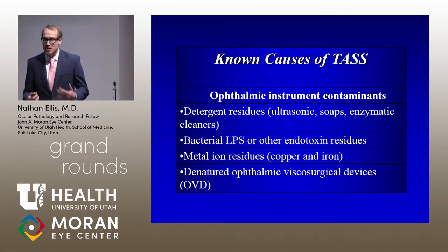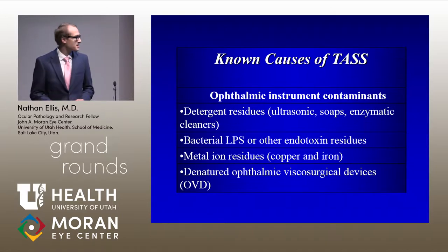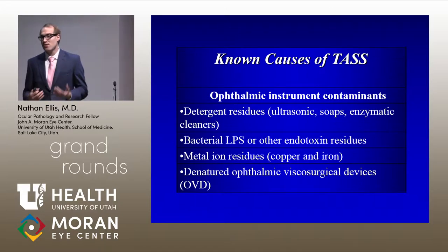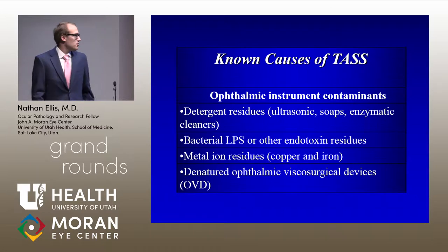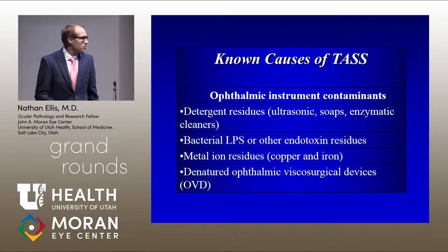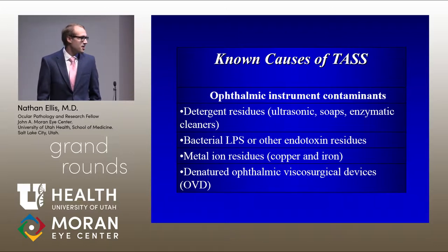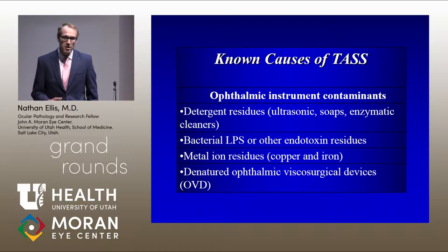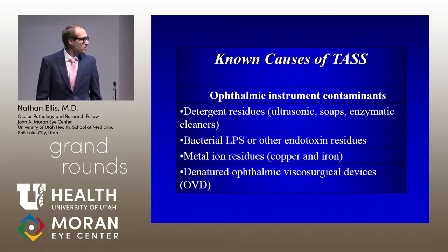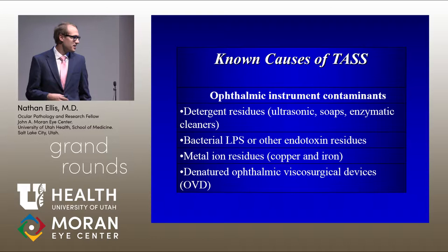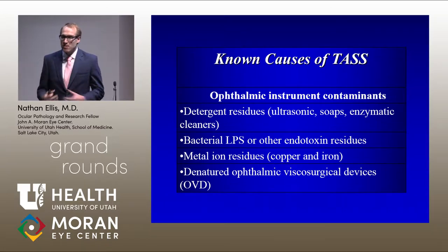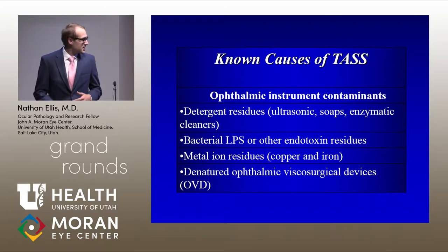One of the most common causes of TASS is ophthalmic instrument contamination through a variety of mechanisms. The most common is detergent residues — from soaps, enzymatic cleaners, or ultrasonic baths, which can harbor gram-negative bacteria. Bacterial lipopolysaccharides and other endotoxins from gram-negative bacteria found in tap water and ultrasonic baths are also implicated. Metal ion residue from copper and iron in older hospital piping was seen in earlier years, as well as denatured ophthalmic viscosurgical devices (OVD).